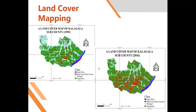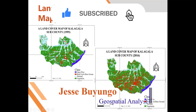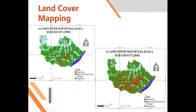Another application is land cover mapping. This is a project I did to compare the change in land cover in 1995 of this sub-county with that of 2016. As you can see, visually you can observe that urban areas increased — these are urban areas distributed across the image — and the wetland reduced, as indicated by the red line showing a reduction in wetland coverage.